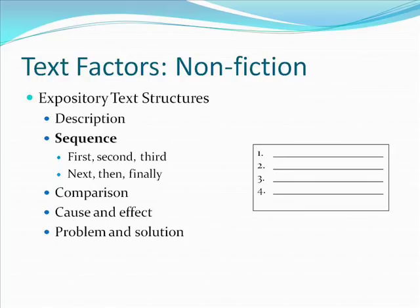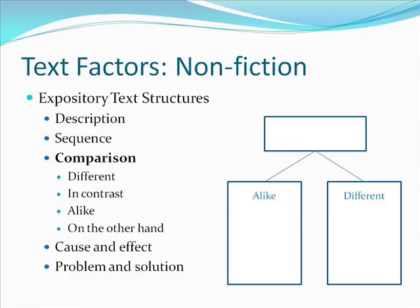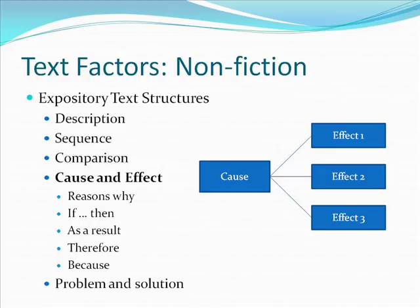Comparison is when the author compares two or more things. Cue words and phrases include 'different,' 'in contrast,' 'alike,' and 'on the other hand.' There are many comparison graphic organizers — the Venn diagram is a popular choice. In cause and effect, the author explains one or more causes and the resulting effects. Cue words include 'reasons why,' 'if-then,' 'as a result,' 'therefore,' and 'because.' Pictured is a graphic organizer best used with this text structure.